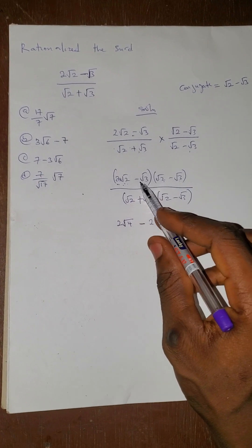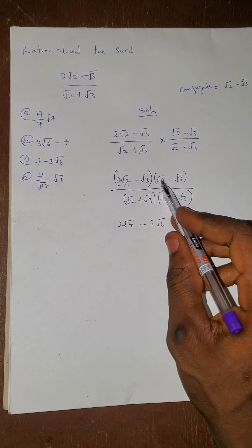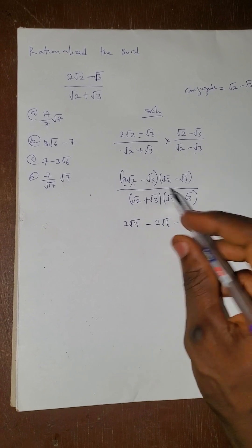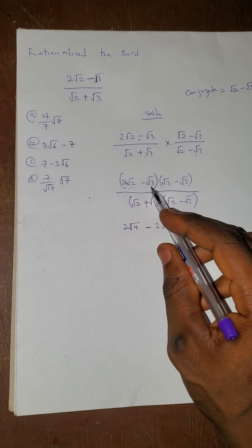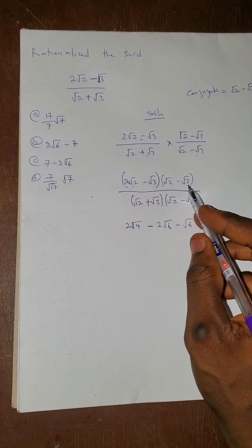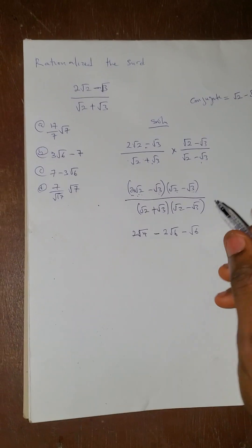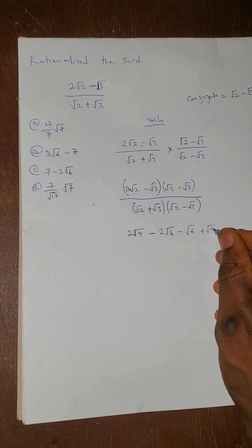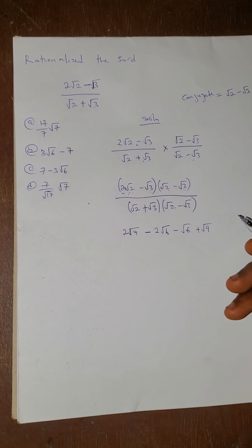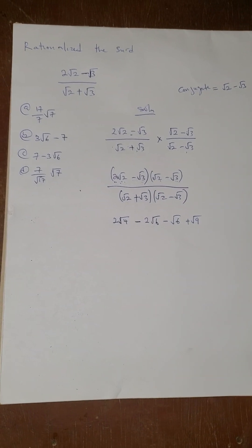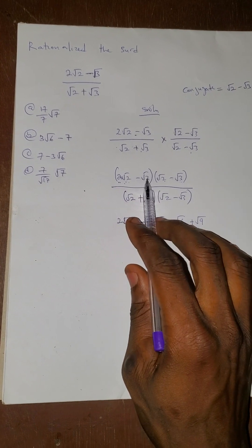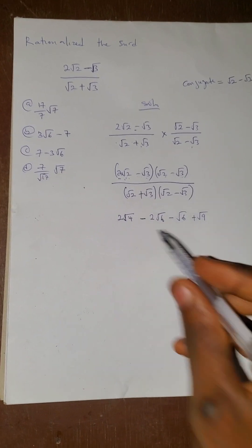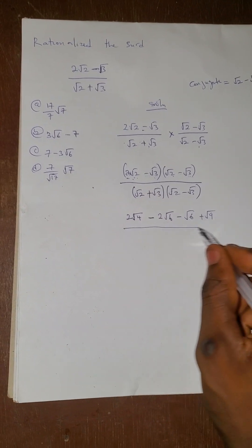Then minus √3 times √2 gives minus √6. Minus √3 times minus √3 — minus times minus is plus — and √3 times √3 gives 9, though by the root shortcut √3 times √3 equals 3. No problem, we continue.